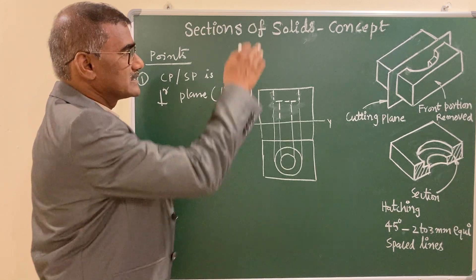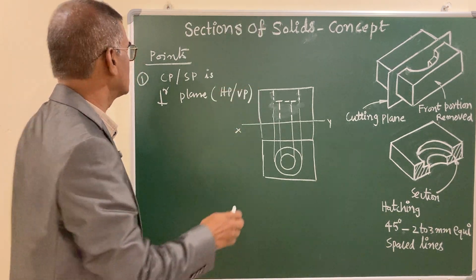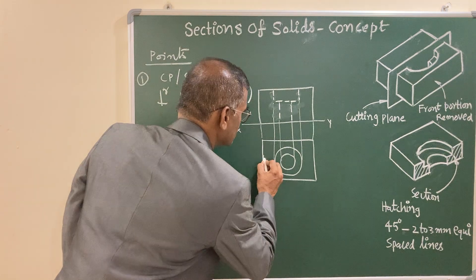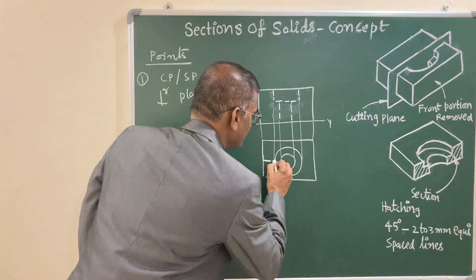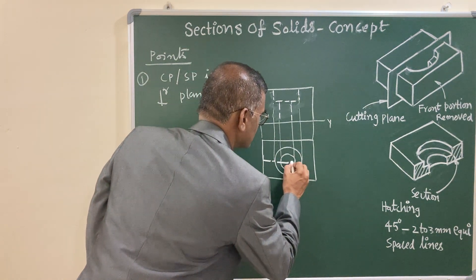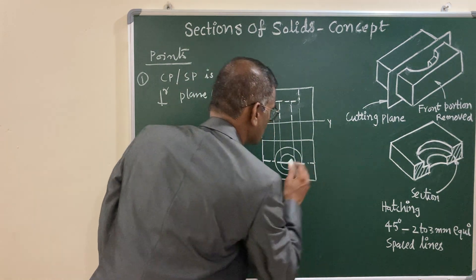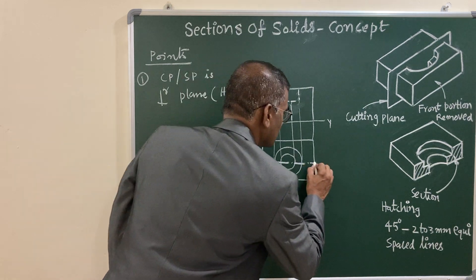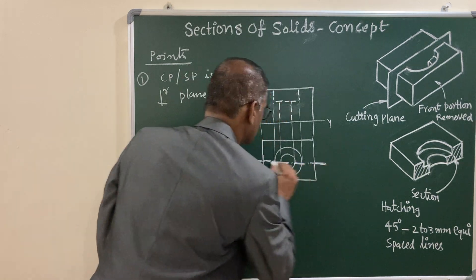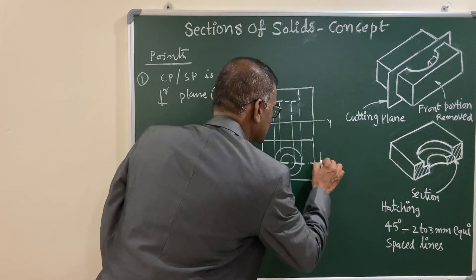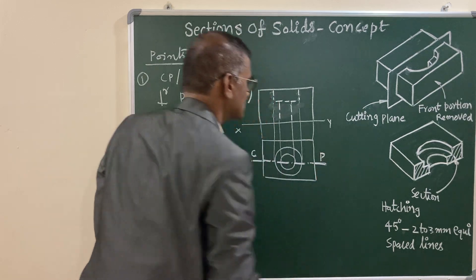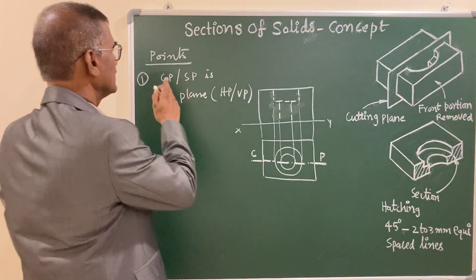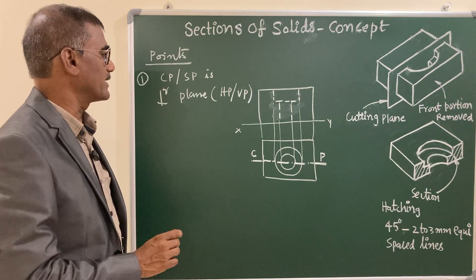It appears as a line in the top view, and that line you represent using an axis line notation within the object. At the ends you make them thick, and you write 'CP' in capital letters as the reference for the cutting plane. This is the notation for your cutting plane or section plane.